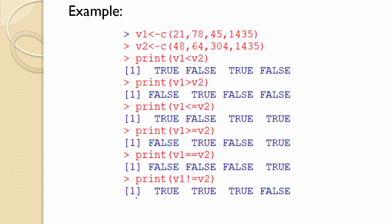For example, we have two vectors: V1 with elements 21, 78, 45, and 1435, and V2 with elements 48, 64, 304, and 1435. If we print V1 less than V2, each element of V1 is compared with the corresponding element of V2. Is 21 less than 48? Yes, true. Is 78 less than 64? No, false. Is 45 less than 304? Yes, true. Is 1435 less than 1435? No — they are equal — so the result is false.